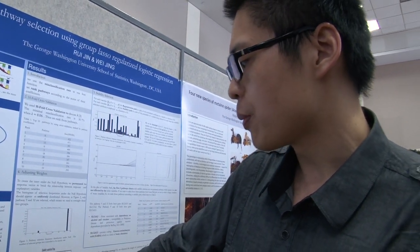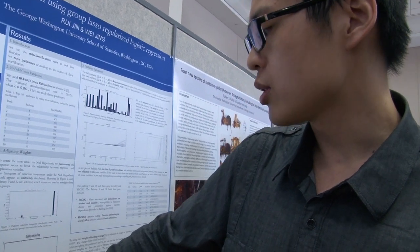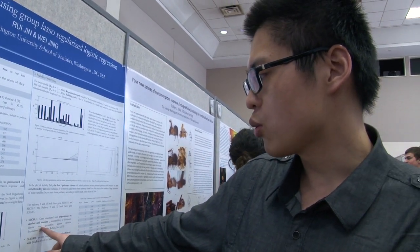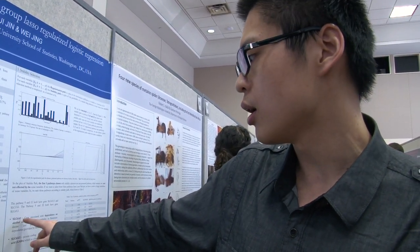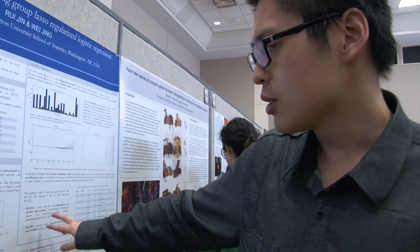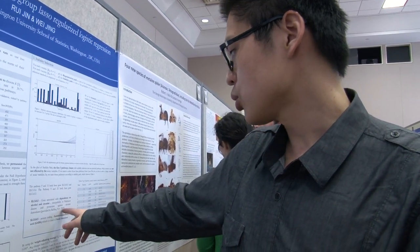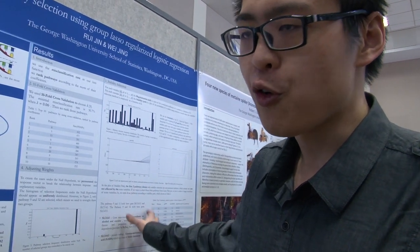This plot shows the result after we use a new way to select the pathways, and we also rank the pathways in this plot. The result shows that we select two genes: SLC6A3 and SLC6A11. These two genes have been demonstrated to have a high correlation with alcoholism — demonstrated in 2009 — and our analysis confirms this result. If we have a bigger dataset, we can have an even better analysis.